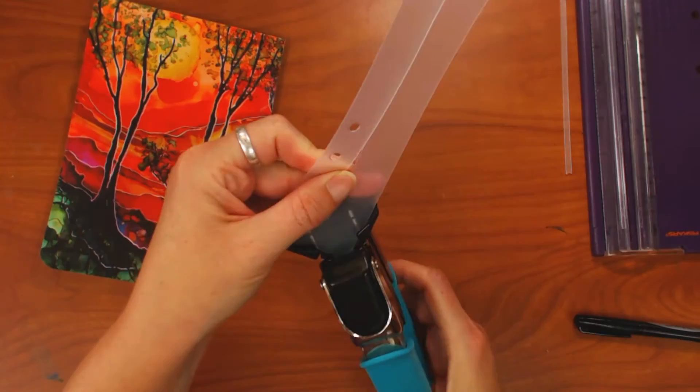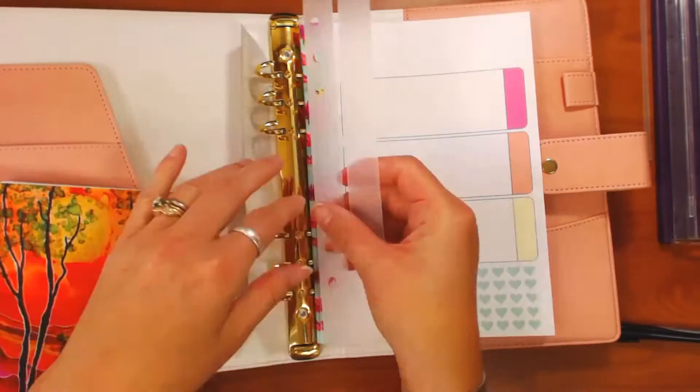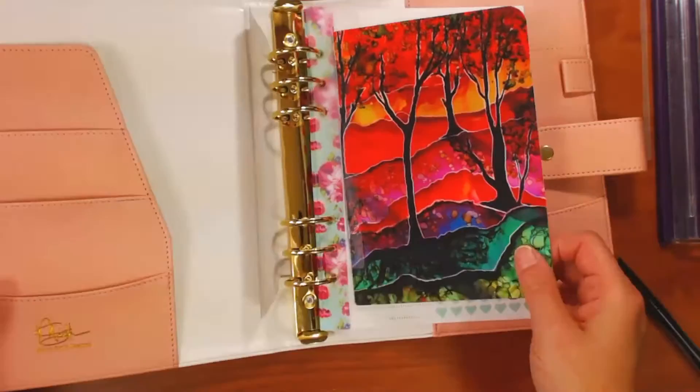If it's too tight, just make your slot a little bit longer. Then I take my crop-a-dial corner rounder and I just round off the corners just because I like the rounded corners rather than the sharp corners. So now I am just putting the insert into my six-ring planner and it fits just perfectly.